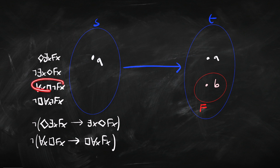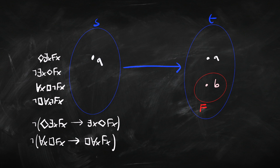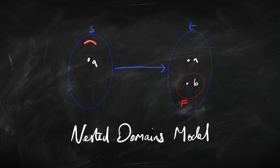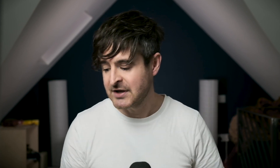We can also show this with the usual version of the Barcan sentence using boxes and for-alls. 'Everything is necessarily not F' — that's true over in world S because A is necessarily not F, and everything in S is just A. But is it the case that necessarily everything is not F? No — over in world T, it's not the case that everything is not F, because B is F. So here it's not the case that necessarily everything is not F. That's a counterexample to the Barcan sentence. This kind of model is called a nested domains model because the domain in S — just A — is nested inside the domain in T — A and B.